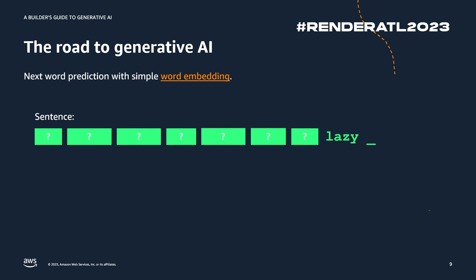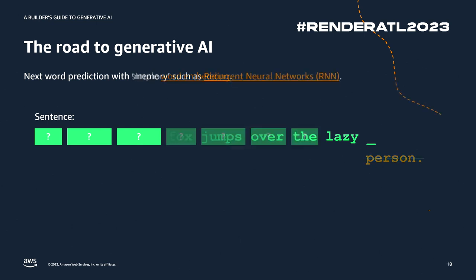This allows us to do next word prediction — very simple. You have that graph: what would come next? This is kind of the first instance, called a Recurrent Neural Network. It added a dimension of what are the other words in the sentence. So 'the fox jumps over the lazy' — what's the next word that comes after that? Rabbit. But it doesn't have the full context of the sentence. So this was kind of the first step of language model prediction.